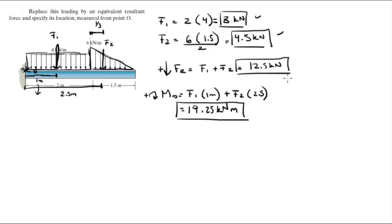Now the location of this resultant force to create this moment about O is found by moment O equals the resultant force times the distance D. D is what we're trying to find. D is equal to the moment O over F of R, which is equal to 19.25 kilonewton meters divided by 12.5 kilonewtons, so this is equal to 1.54 meters.